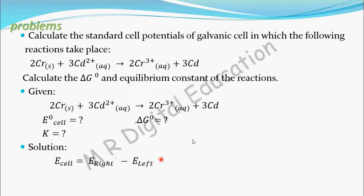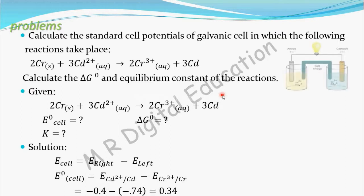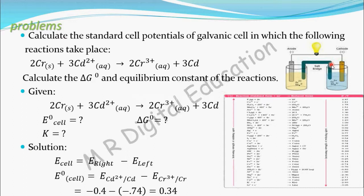From this reaction we have to identify which will be on the right side and which will be on the left side — which is cathode and which is anode, which is undergoing oxidation and which is undergoing reduction. Chromium is undergoing oxidation: Cr is converting into Cr³⁺. In a galvanic cell, at the anode, oxidation always happens and the anode is on the left side.